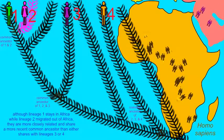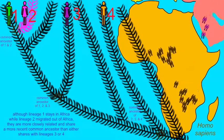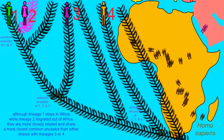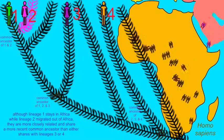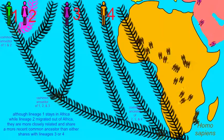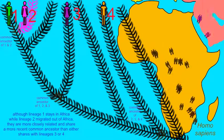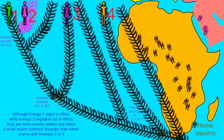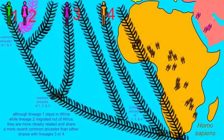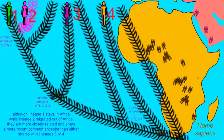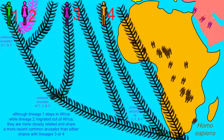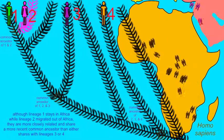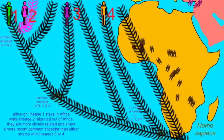Perhaps this example can better illustrate this point. If the lineage of individual two, indicated in pink, migrated from Africa to colonize Asia, the Africans of lineage number one are more closely related to the non-Africans of lineage two because they have shared a common ancestor recently, and fewer genetic differences have accumulated between them.